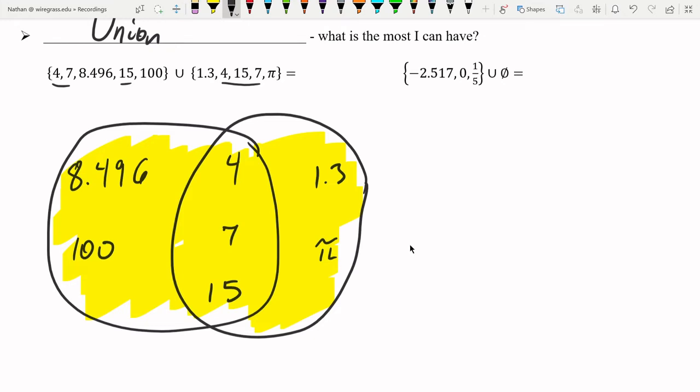So it's pretty much everything that's contained in the circles. And that's important to note that sets never repeat. So our union is going to be, I'm just going to start at the left and go to the right. 100, 4, 7, 15, 1.3, and pi. I did not write 4, 7, and 15 twice because there is no repetition allowed in the sets. And this is our union.